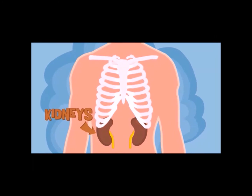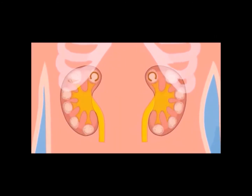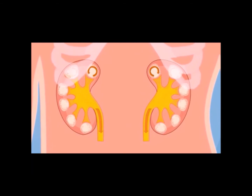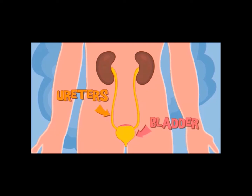The kidneys are organs about the size of our fists that sit under our ribs along our backs. Kidneys filter blood to remove wastes; the waste and extra water combine to form urine. From the kidney, the urine enters two small tubes called ureters, one coming from each kidney. The ureters carry urine from the kidney to the bladder, which is a hollow muscular organ that stores urine.